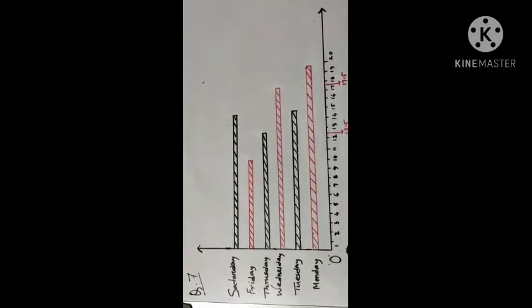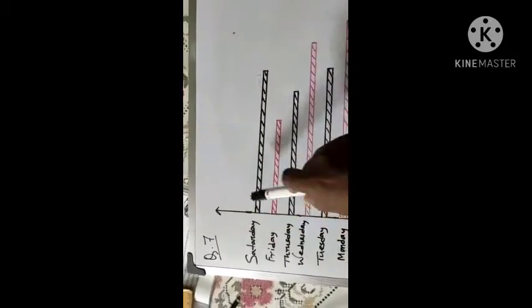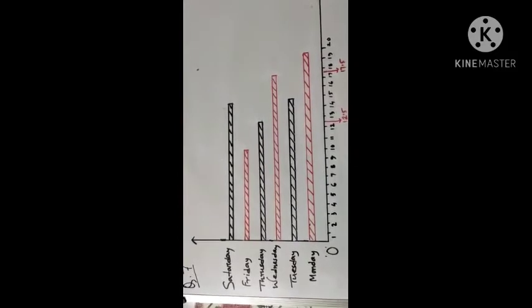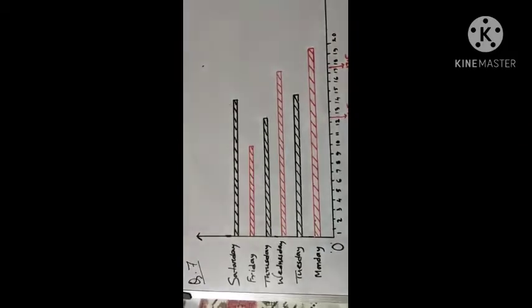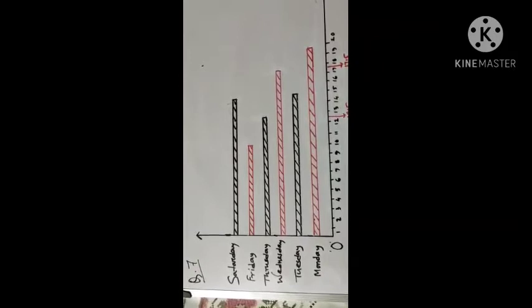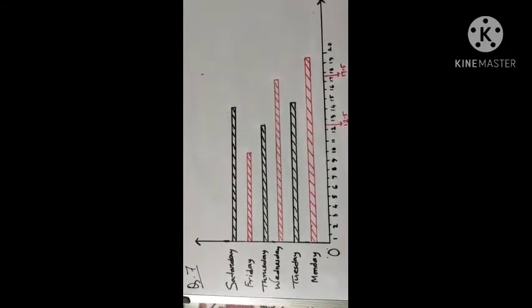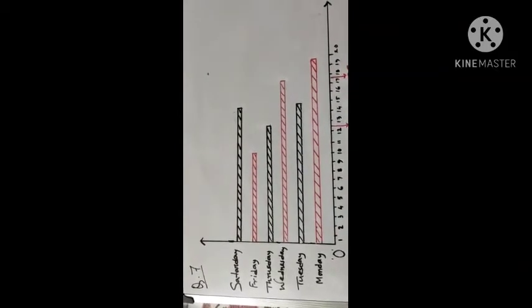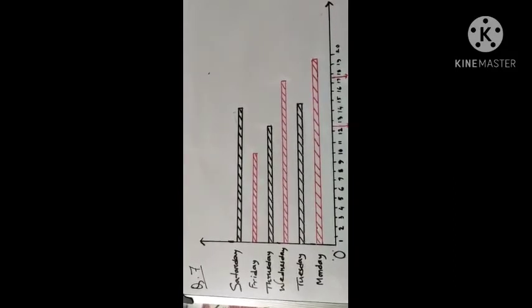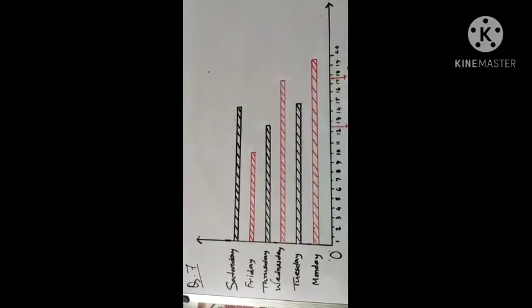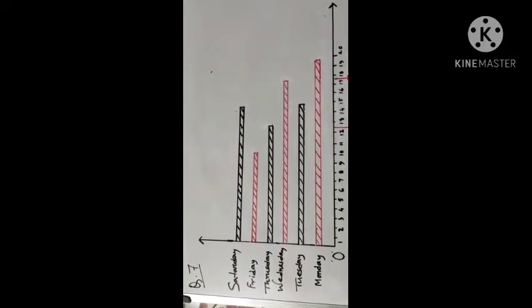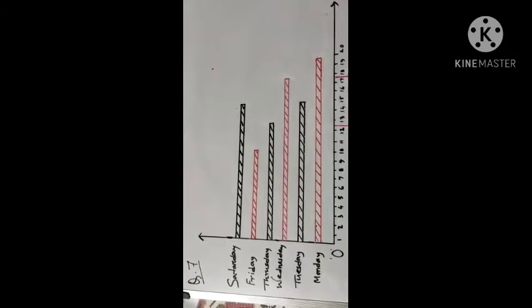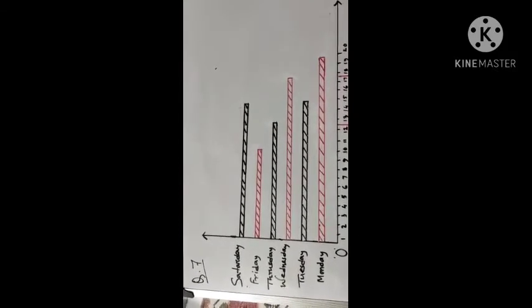We choose the horizontal line as the number of bags sold, and the vertical line as the number of days. On the horizontal line, one unit of length represents two bags. On the vertical line, each of the six days has been taken at equal distance from one another. The length of each horizontal rectangle corresponding to each day indicates the number of bags sold on that day.